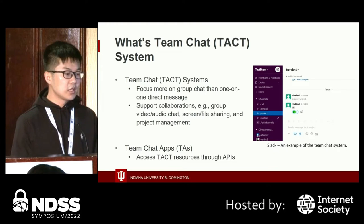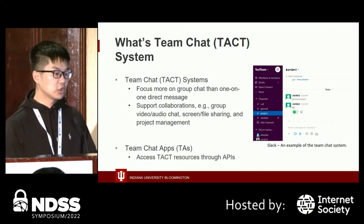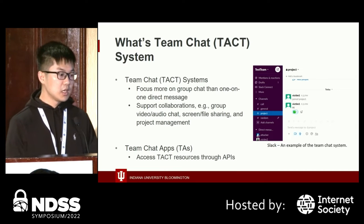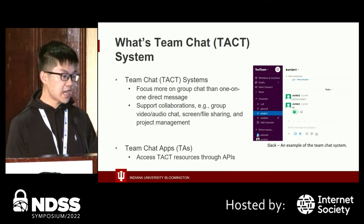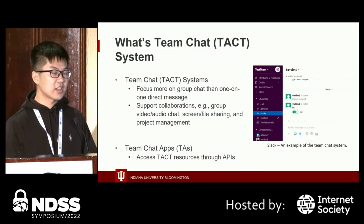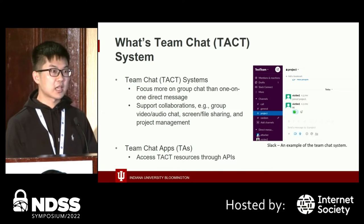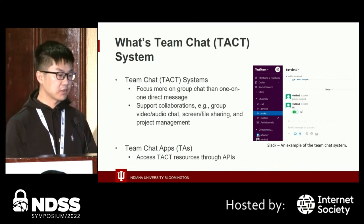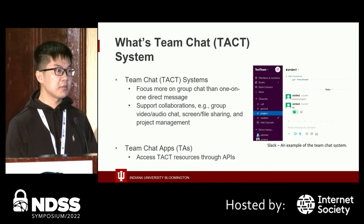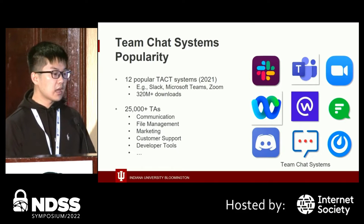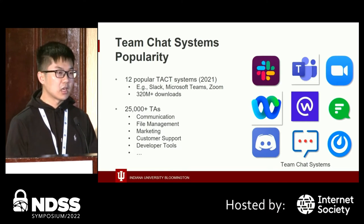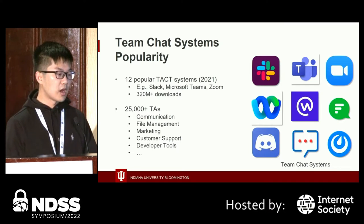What is a Team Chat System? A Team Chat System is software that allows team members to collaborate online. There are two main features: team members focus more on group chat than one-on-one direct messages, and the system is designed to support collaborations such as group video, screen sharing, and project management. During our research, we identified 12 popular team chat systems such as Slack, Microsoft Teams, and Zoom, which have a combined 320 million downloads from the Google Play Store.